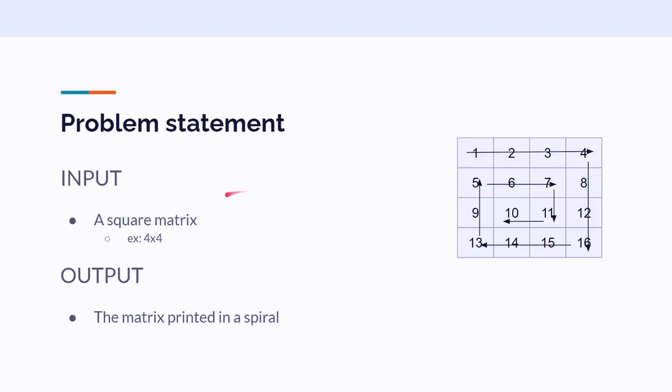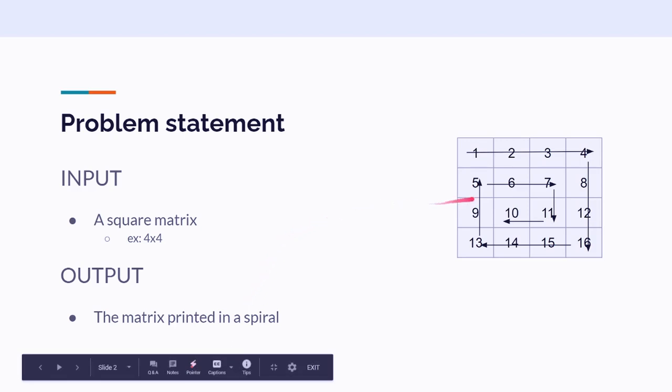Problem Statement. The input is a square matrix. Example, a 4x4 matrix, like the one we are going to be using today. The output would be a matrix printed in a spiral.